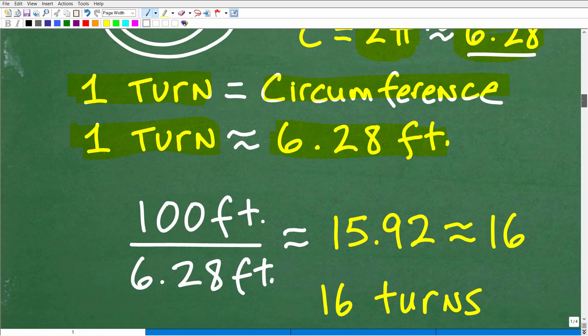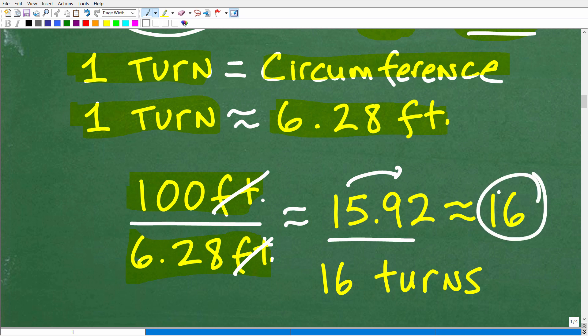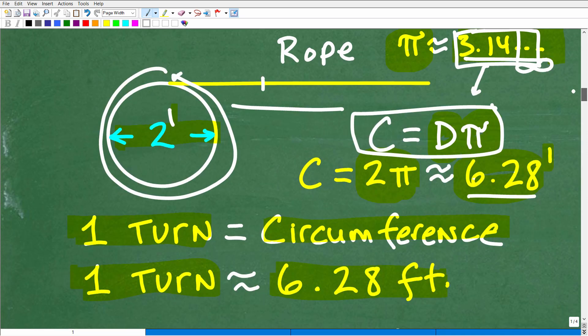All right, so with that knowledge, this is now a pretty easy problem. We want to bring in 100 feet of rope, and we're bringing it in at 6.28 feet at a time, right? So this is one turn. So 100 divided by 6.28, these feet per cross cancel. 100 divided by 6.28 is approximately 15.92. So that's number of turns, right? So let's just kind of round that up to 16. So it's going to be approximately 16 turns of our pulley. We'll bring in 100 feet.